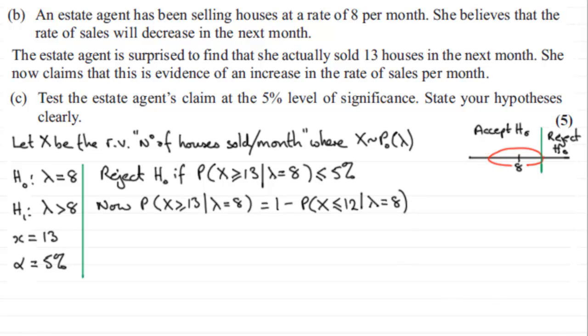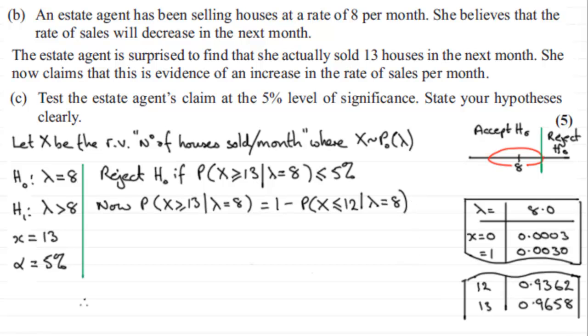If we get those tables out, I've got an extract here where we look under lambda equaling 8. We're looking down this column until we find the probability of X being less than or equal to 12, which is this value here: 0.9362. So it's going to be 1 minus 0.9362, and if you work that out you end up with 0.0638, which is 6.38%, which is greater than 5%.